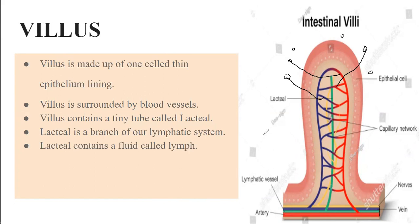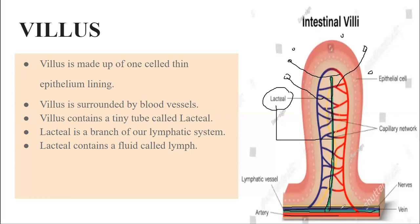Inside every villus, right in the middle, there is a green-colored tube-like structure called a lacteal. Lacteal is a tiny branch of our lymphatic system. At the base of each villus there is an artery (red), a vein (blue), a nerve (yellow), and a lacteal (green). Throughout our body we have a network of these tubes — arteries and veins carry blood, nerves carry impulses from the brain to different parts of the body, and lacteals are part of the lymphatic system.